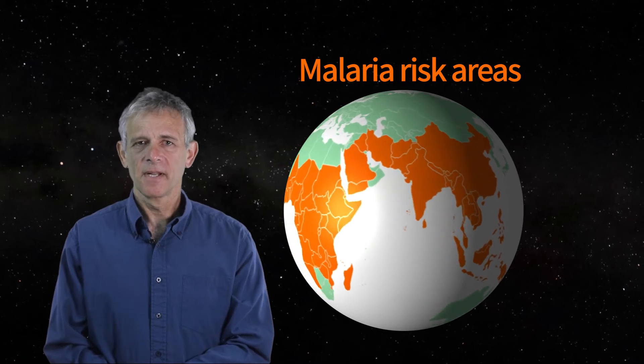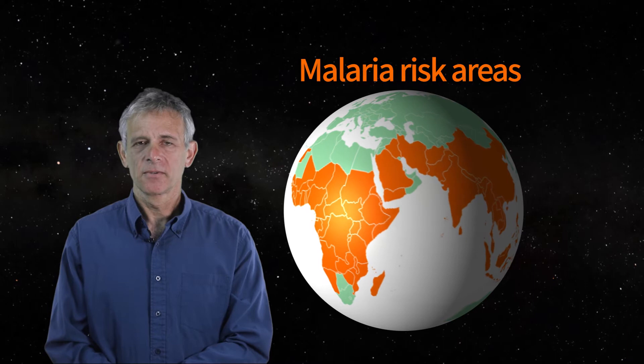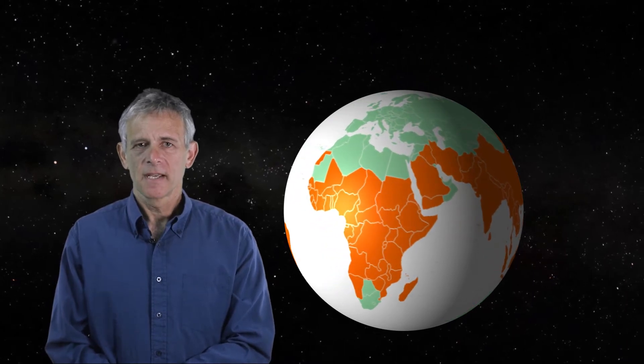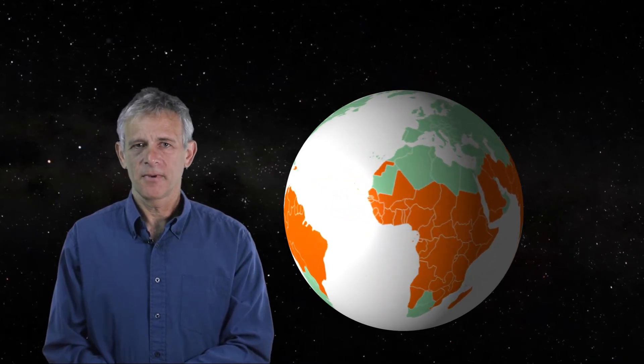Malaria affects hundreds of millions of humans in many areas of the world. Today it is prevalent mainly in the third world, as it has been eradicated elsewhere. Up to 100 years ago it was globally widespread. Half a million people die from malaria annually — an improvement over the 3 million annual victims not so long ago.